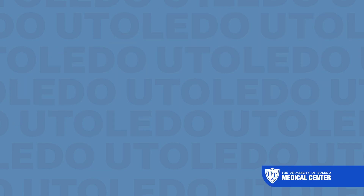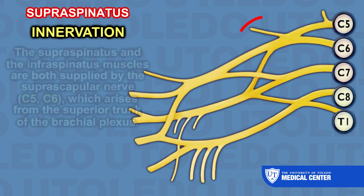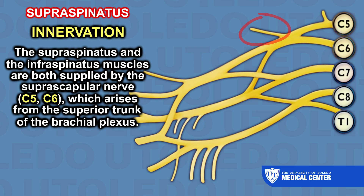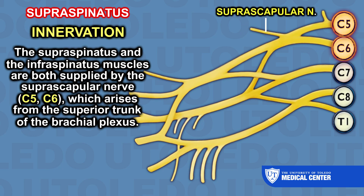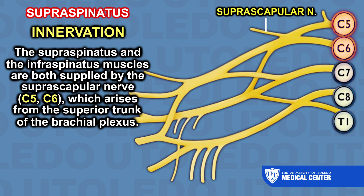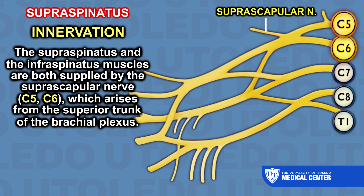The supraspinatus and the infraspinatus muscles are both supplied by the suprascapular nerve, C5-C6, which arises from the superior trunk of the brachial plexus.